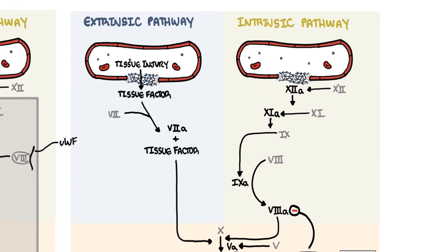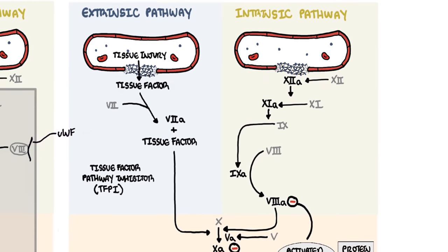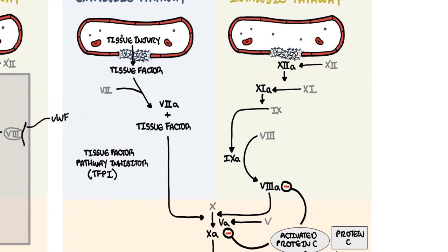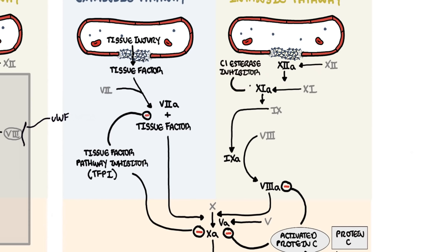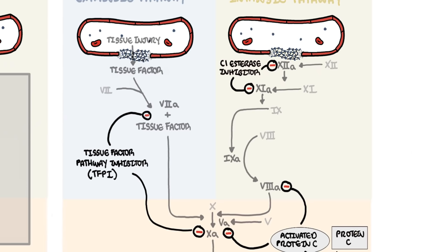Another antithrombotic pathway is through tissue factor pathway inhibitor, or TFPI, which circulates in plasma at very low concentrations. It works in the extrinsic pathway and inhibits factor 10 activation in two main ways: it directly inhibits factor 10a, and it also inhibits the tissue factor–factor 7a complex. The other antithrombotic pathway is the C1 esterase inhibitor, a protease inhibitor that inhibits factors 11a and 12a, as well as the complement proteases C1r and C1s.